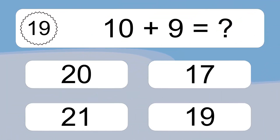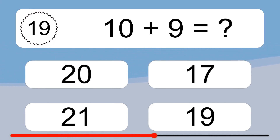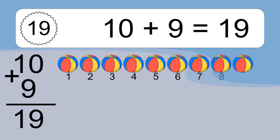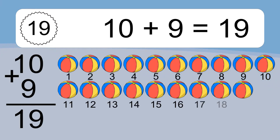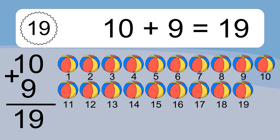Let's count it: 1, 2, 3, 4, 5, 6, 7, 8, 9, 10, 11, 12, 13, 14, 15, 16, 17, 18, 19. 10 plus 4 equals what?